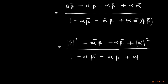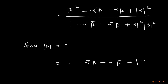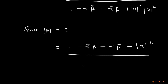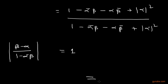Here we have 1 minus alpha into beta conjugate minus alpha conjugate into beta, and this value is square of mod alpha into square of mod beta. Since mod beta equals 1, this value becomes 1. So the numerator equals the denominator: 1 minus alpha conjugate beta minus alpha into beta conjugate plus mod alpha squared — same as the denominator. Therefore this value equals 1, and so mod of (beta minus alpha) over (1 minus alpha conjugate beta) equals 1. That is the solution.